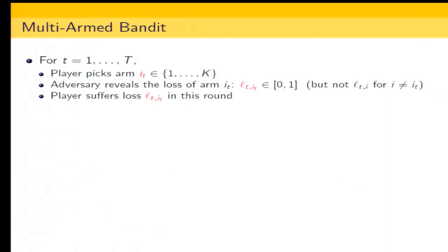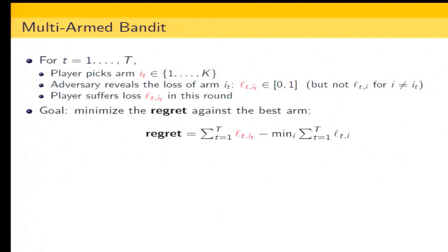This paper mainly deals with the multi-armed bandit problem, which was already explained in the previous presentation, so I'll briefly go over it. In each round, the player picks an arm, and the adversary reveals the loss of the picked arm but not the others. The player suffers the loss of the picked arm, and the goal is to minimize the regret — defined as the difference between the cumulative loss of the learner and the cumulative loss of the best arm.